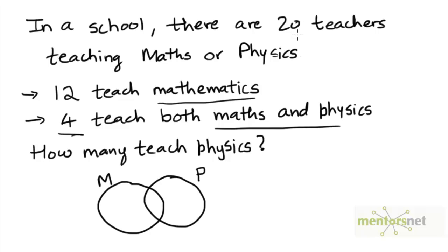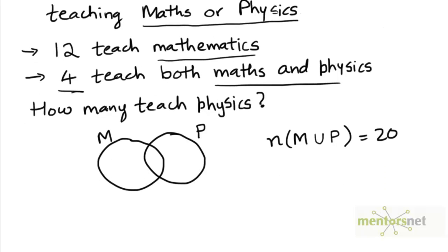We are given that the number of teachers teaching either maths or physics is 20. So we are given that the size of the set M union P is 20. We are also given that the total number of math teachers is 12. So n(M) is 12.